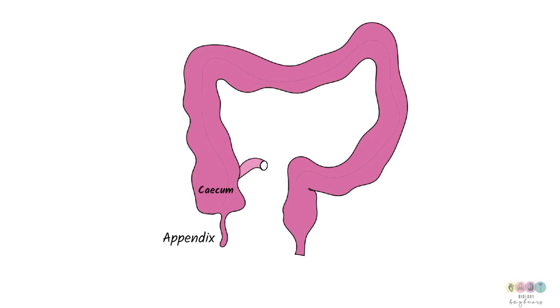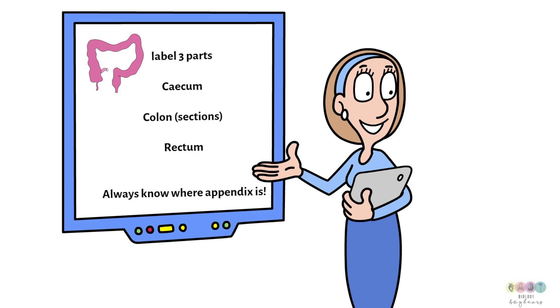It's important that you can label key parts of the large intestine. So the cecum, the appendix, the ascending, transverse and descending colon, the rectum and the anus. If you're asked to label a diagram of the large intestine, always go for a minimum of three labels. Put in the cecum, consider those sections of the colon as one, put in the rectum and I would put in the appendix too.